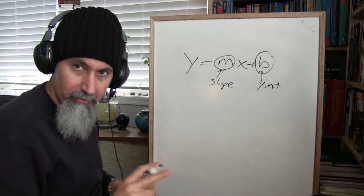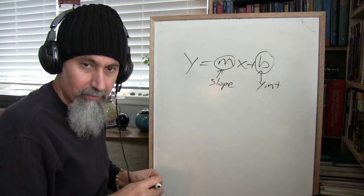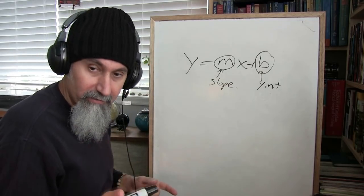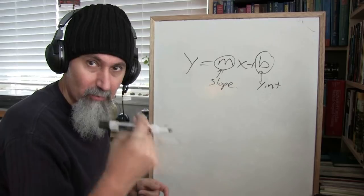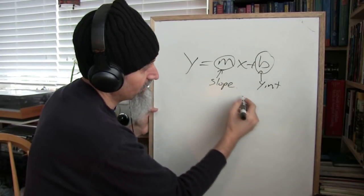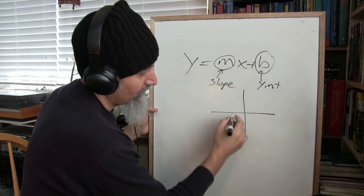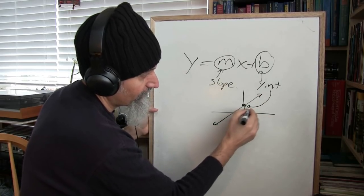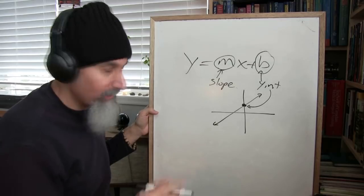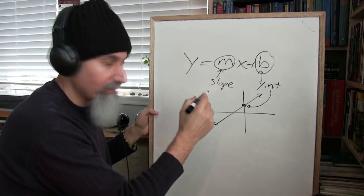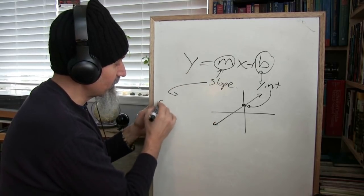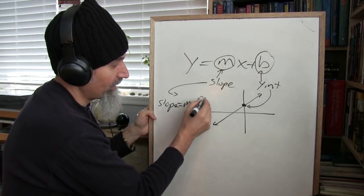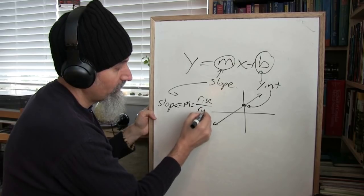You know what these mean? The y-intercept is when the line crosses the y-axis — so basically it's this point here. If I give you this line, this is the y-intercept. And the slope is rise over run, so the slope equation is m equals rise over run.